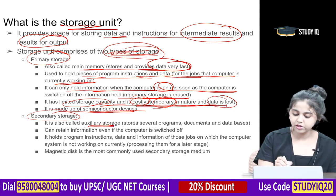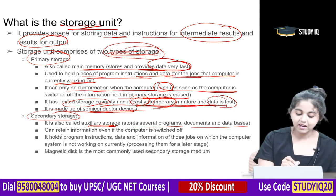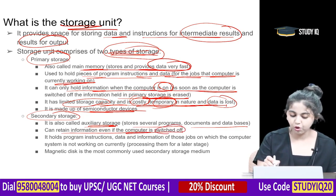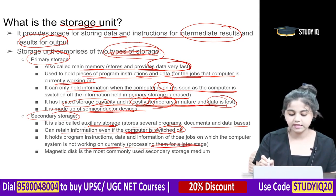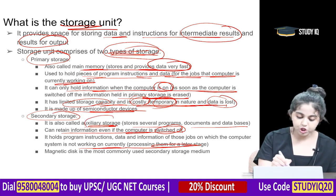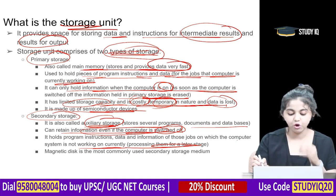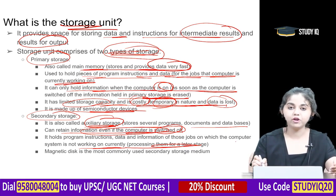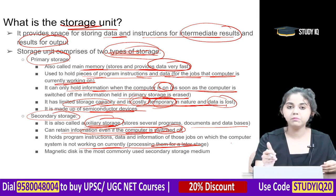Secondary storage is also called auxiliary storage. It stores programs, documents, and databases, and can retain information even when the computer is switched off. It holds data for jobs the computer is not currently processing, to be used at a later stage. Magnetic disk is the most commonly used secondary storage medium.